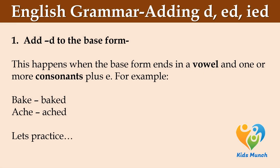The first rule for adding -d to the base form: this happens when the base form ends in a vowel and one or more consonants plus e. For example, b-a-k-e.